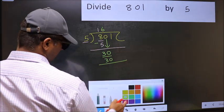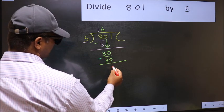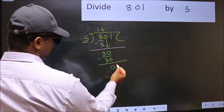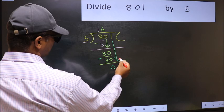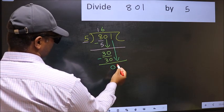Now you should subtract. 30 minus 30, 0. After this, bring down the beside number. So 1 down.